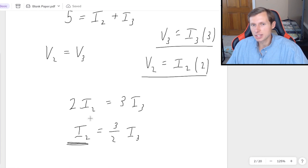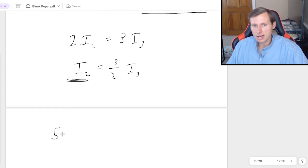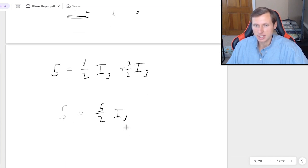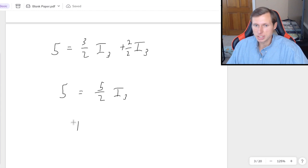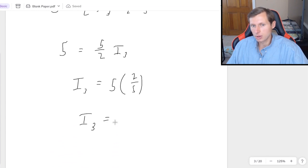But now I can plug in this I2 into the I2 right here from KCL. And I get 5 equals 3 halves I3 plus another I3. Which remember, I need a common denominator here. If I want to reduce this, that's going to be 2 over 2 for a total of 5 halves I3. And then to solve for I3, I just need to multiply both sides by the reciprocal 2 fifths. And I3, the current I wanted, is going to be 2 amps.